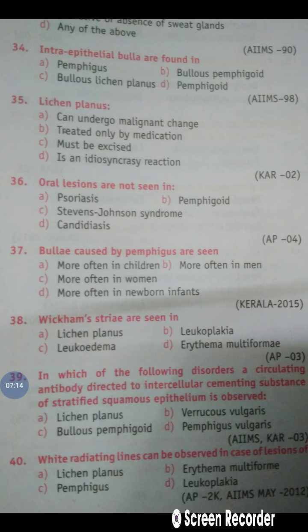Question number 39: In which of the following disorders is a circulating antibody directed to the intercellular cementing substance of stratified squamous epithelium observed? The answer is Pemphigus Vulgaris. In Pemphigus Vulgaris, you can detect this circulating antibody directed against the intercellular cementing substance.